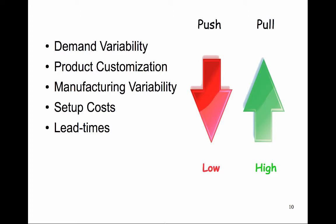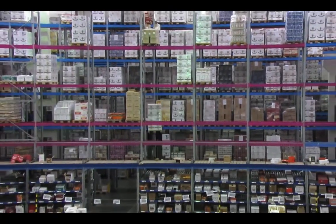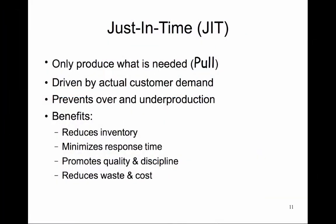Can you think of an example product for each of these systems? Holding high levels of inventory can mask problems in a supply chain. A common inventory principle referred to as just-in-time inventory helps eliminate the high cost of sitting inventory. The goal is to only produce what is needed — a pull system driven by actual demand — preventing over and under production, reducing inventory, minimizing response time, promoting quality and discipline, and reducing waste and cost. The objective is to smooth the flow of material to arrive when it is needed.